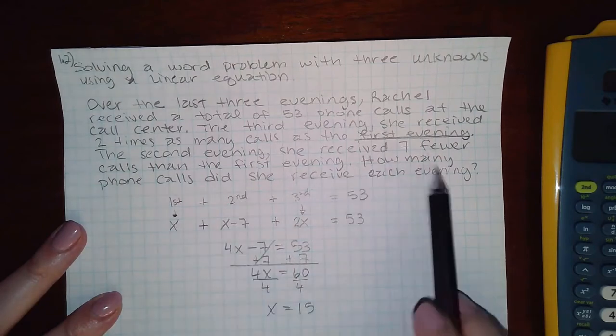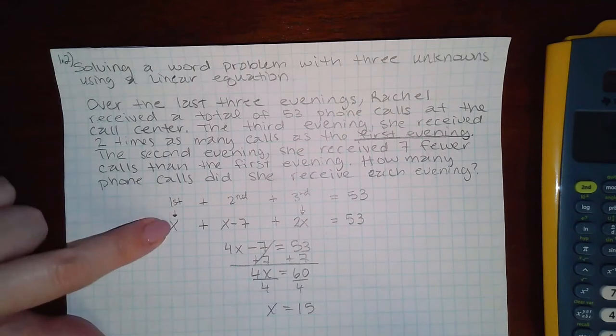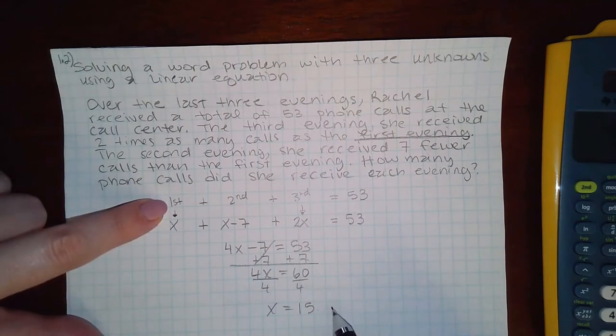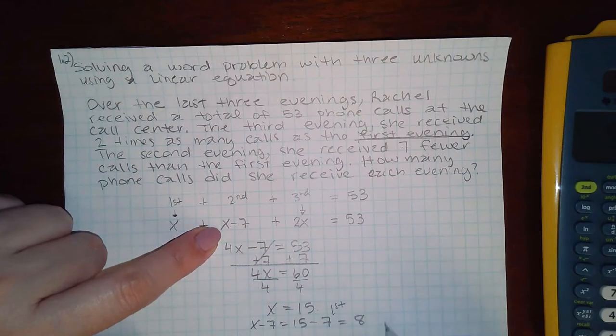It says how many calls did she receive each evening? So we know that x represents the first evening, so 15 on the first night. Then x minus seven, which would be 15 minus seven, or 8, is how many calls she received on the second night.